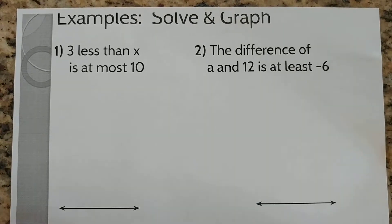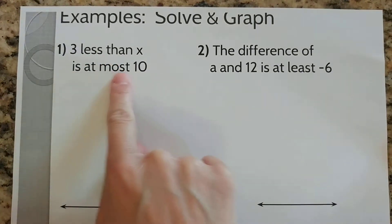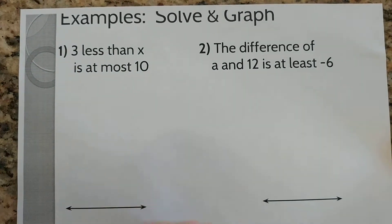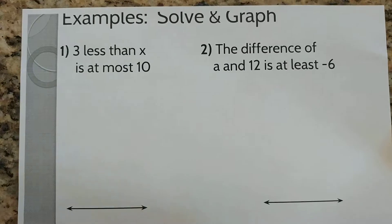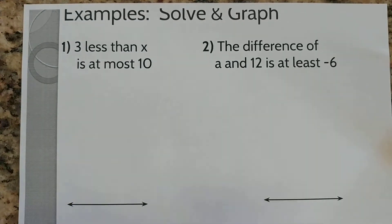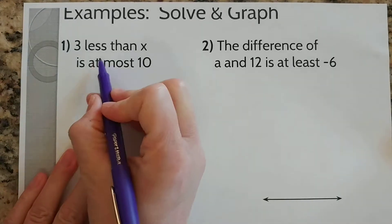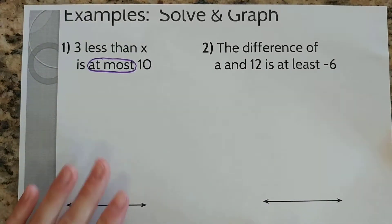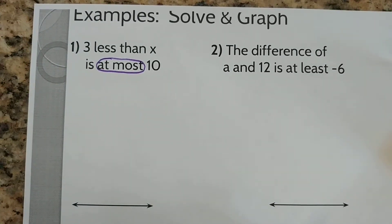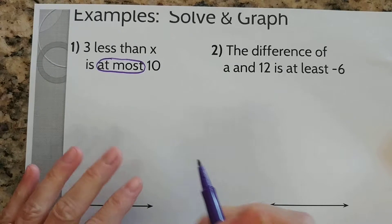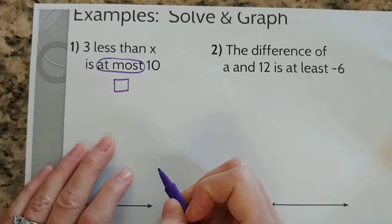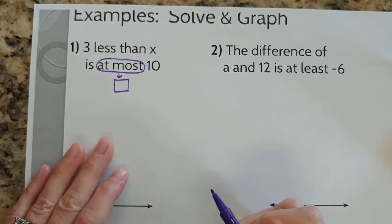Example number 1. It says 3 less than x is at most 10. I would like you to circle the words in this sentence that represent the inequality symbol on your paper. Did you circle "at most"? That's right. We're going to replace "at most" with an inequality symbol. I'm just going to put this little box here to represent that inequality symbol. We're going to change that into an inequality symbol in just a minute.